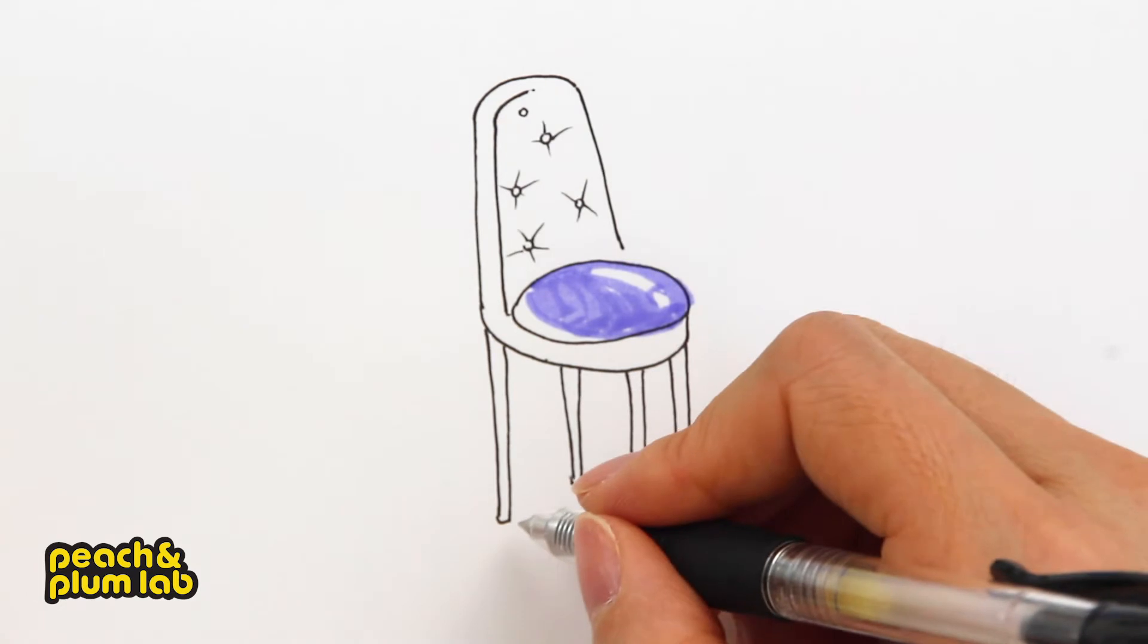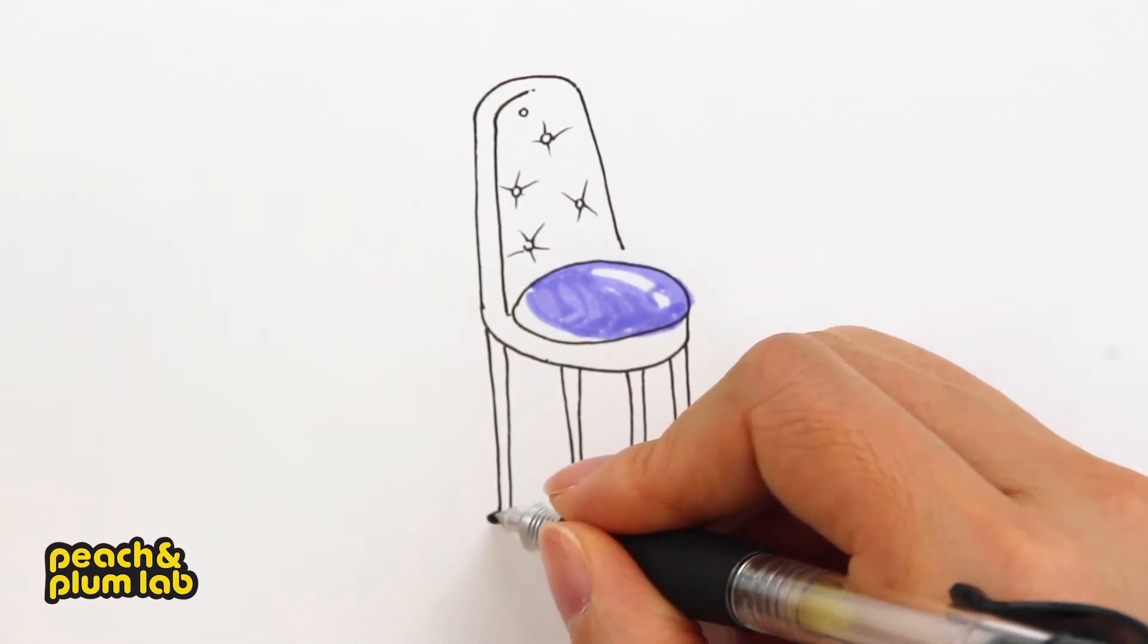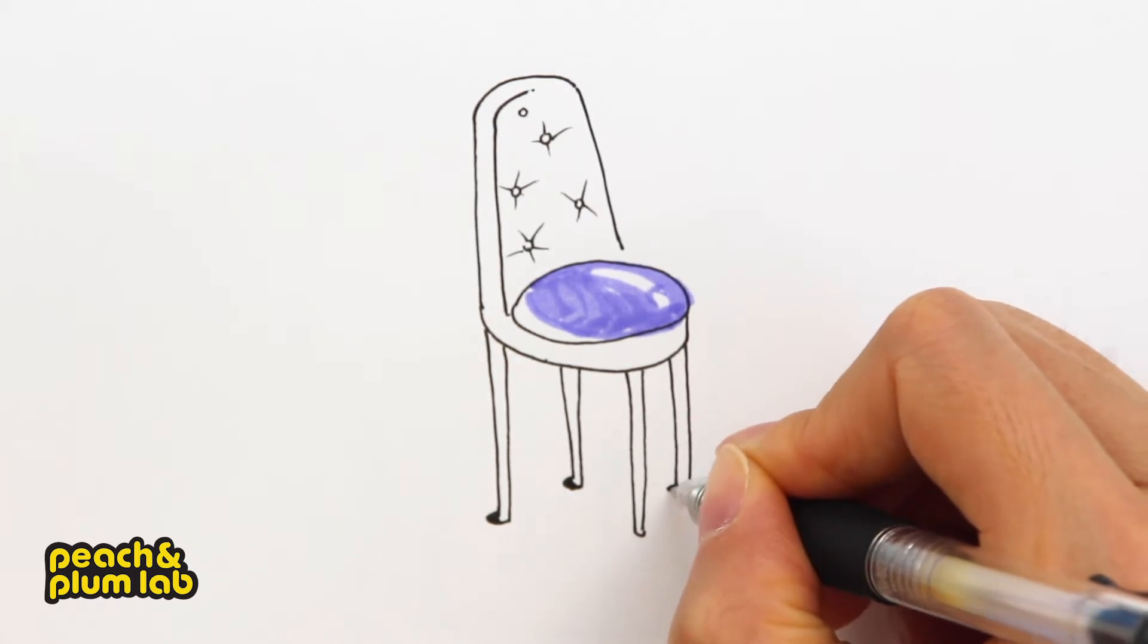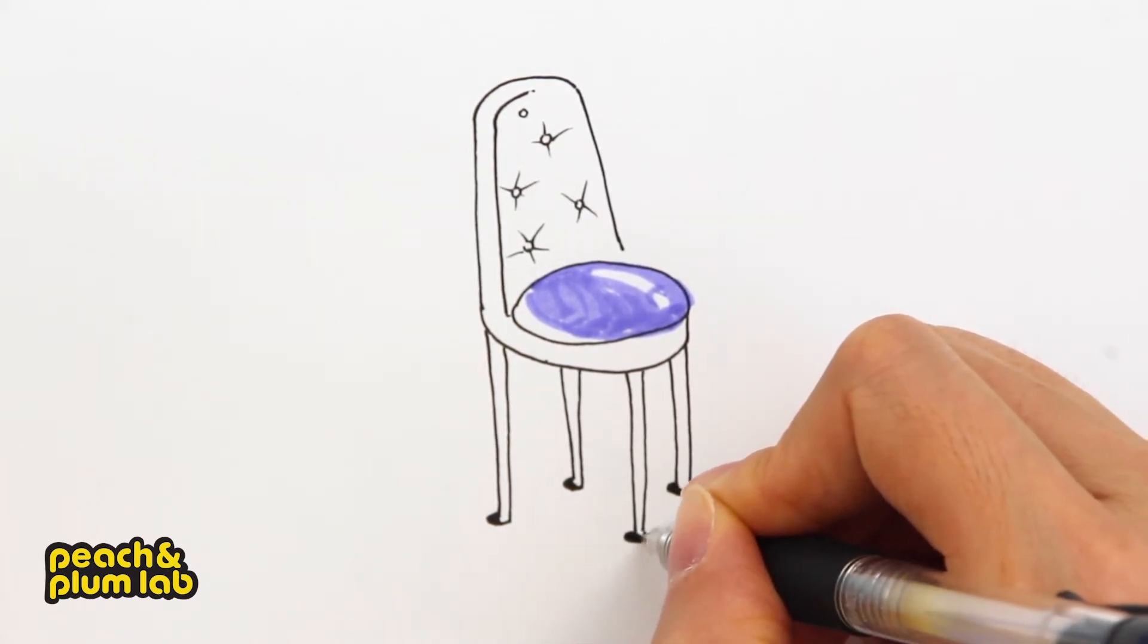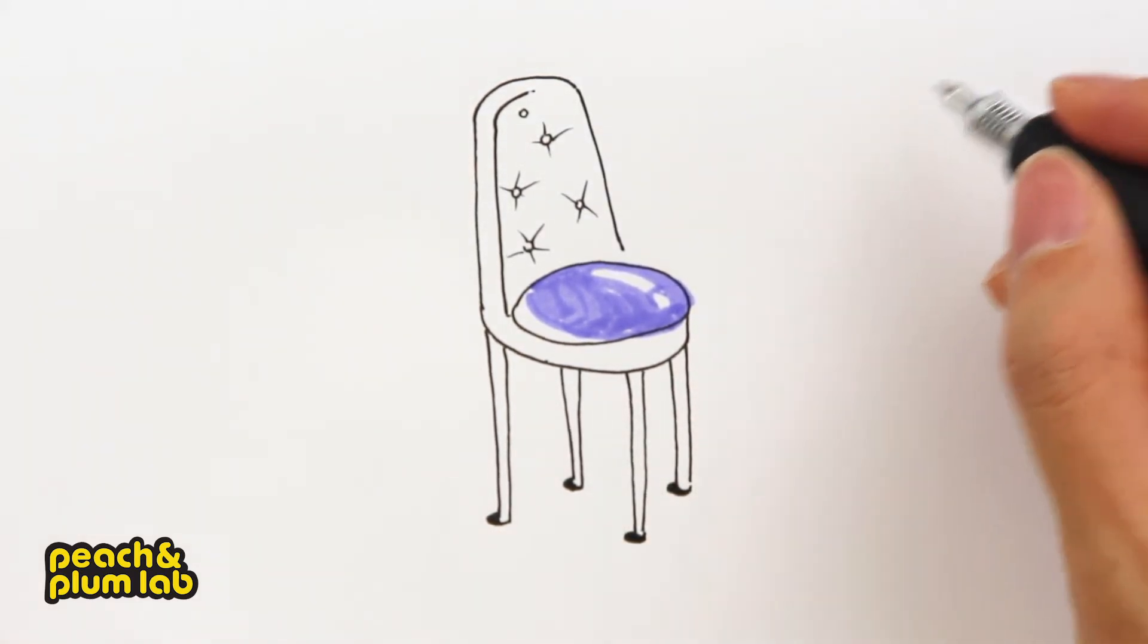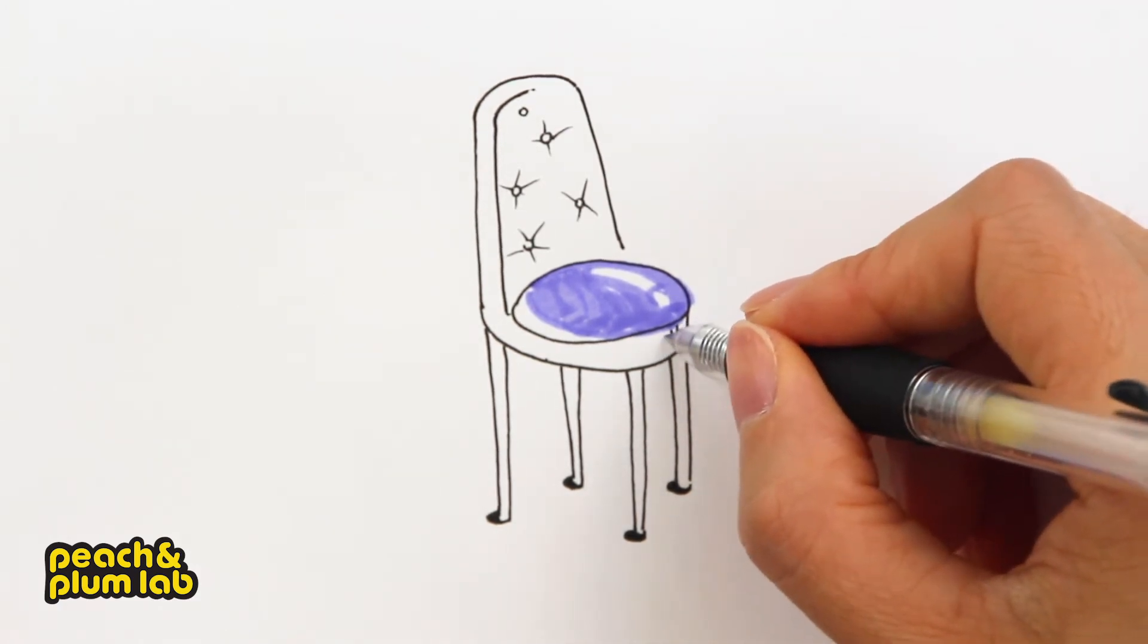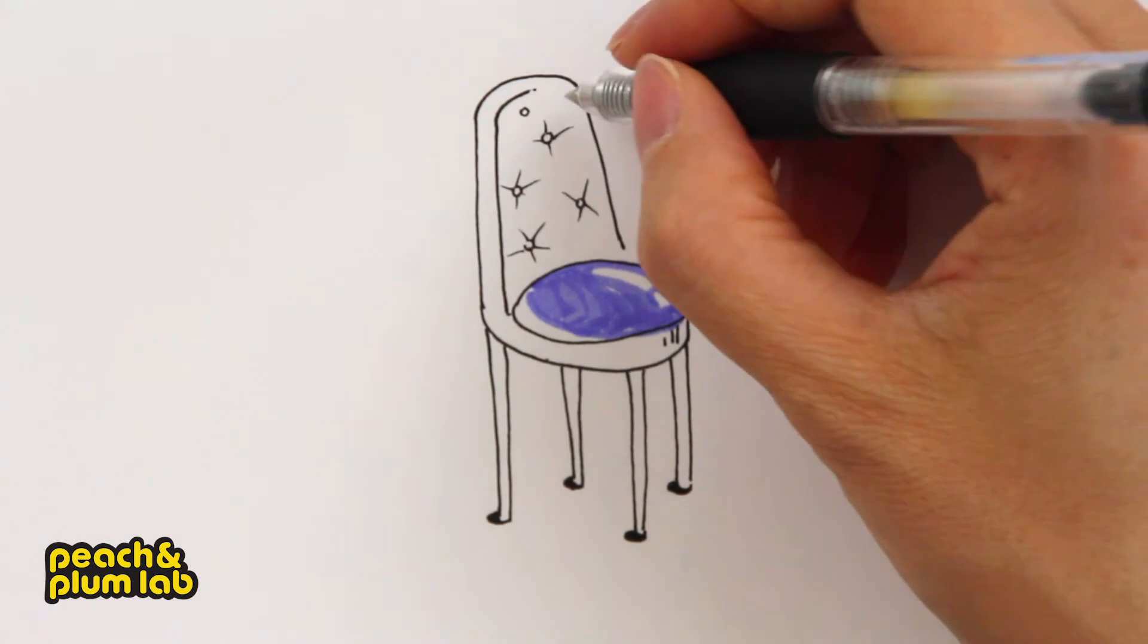First, of course, let's add some shadow. Let's add some shadow around the leg area. As you can see, because the light comes from this way, so what I'm going to do right here is to add some lines on the right hand side.